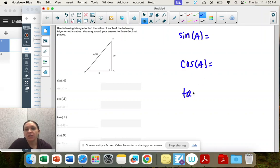So sine, cosine, tangent. Those are our three trig ratios. Sine is opposite over hypotenuse. Cosine is adjacent over hypotenuse. And tangent is opposite over adjacent.